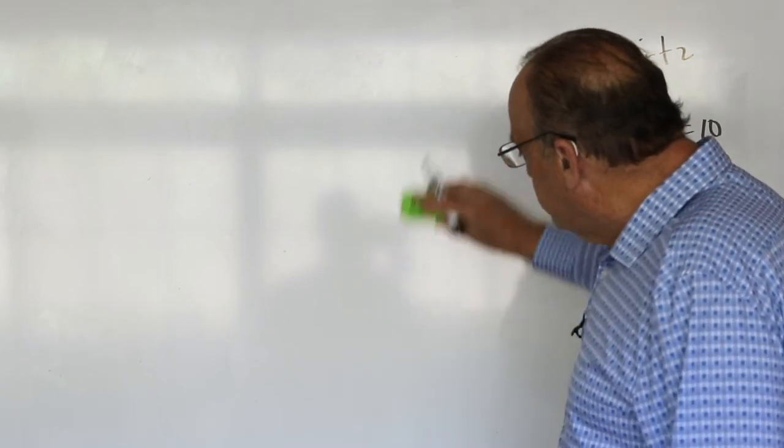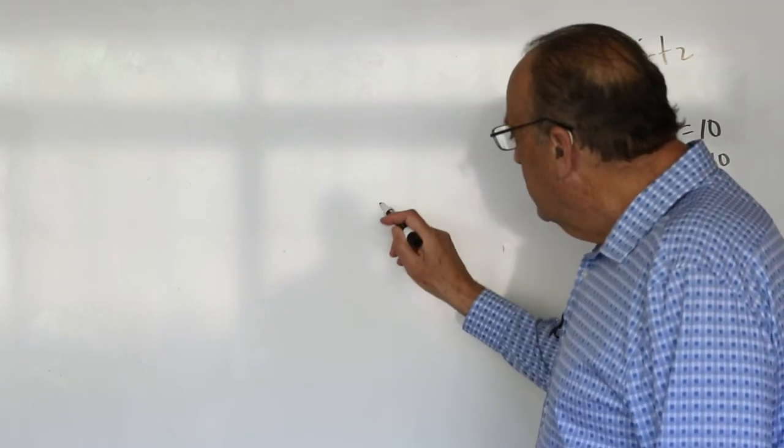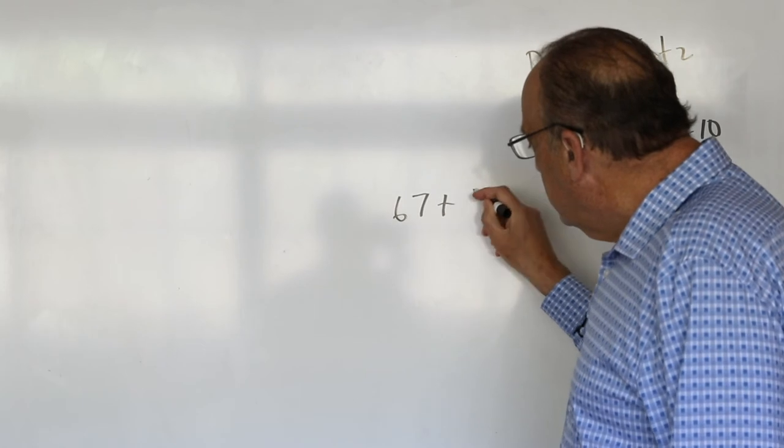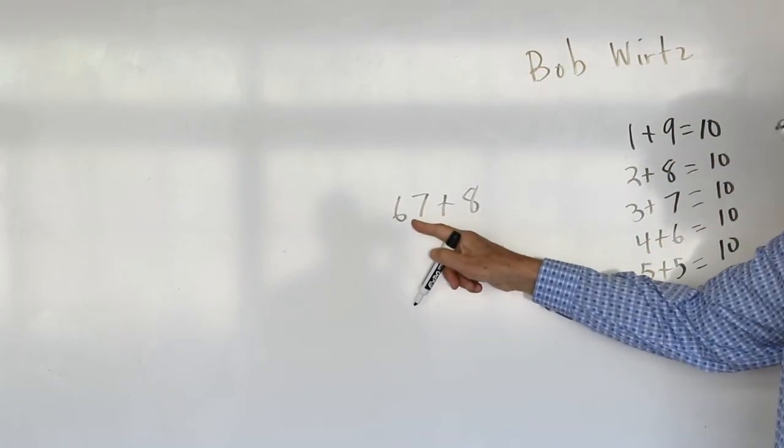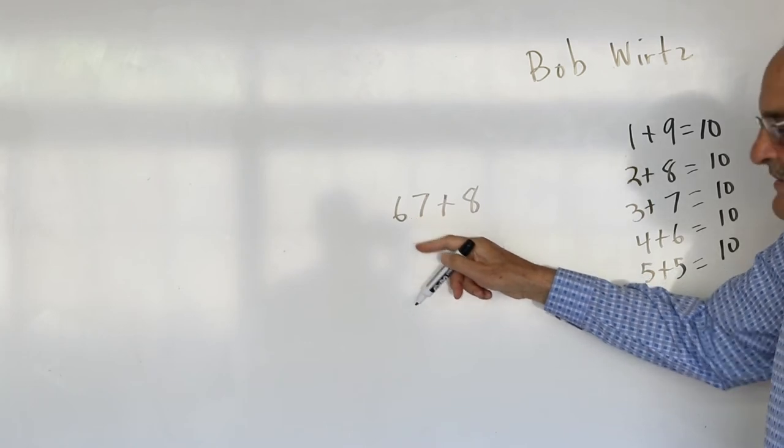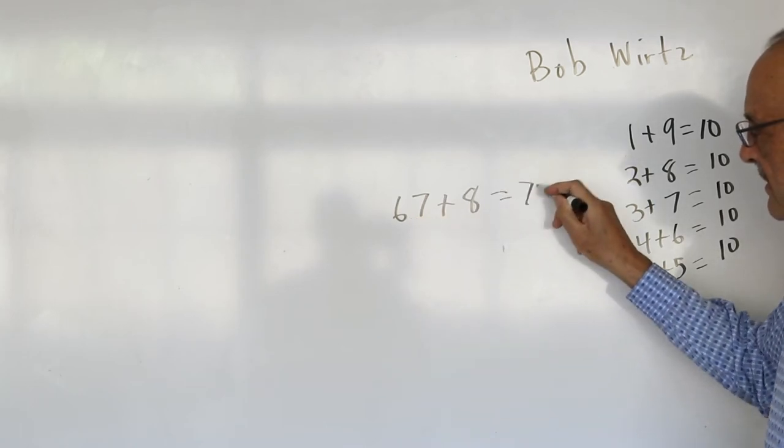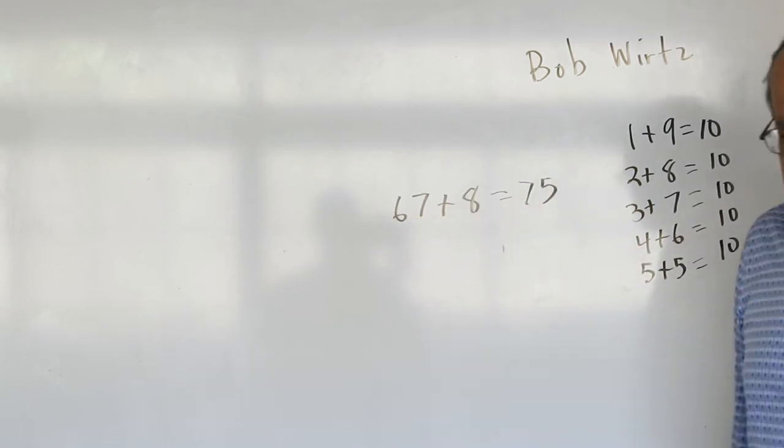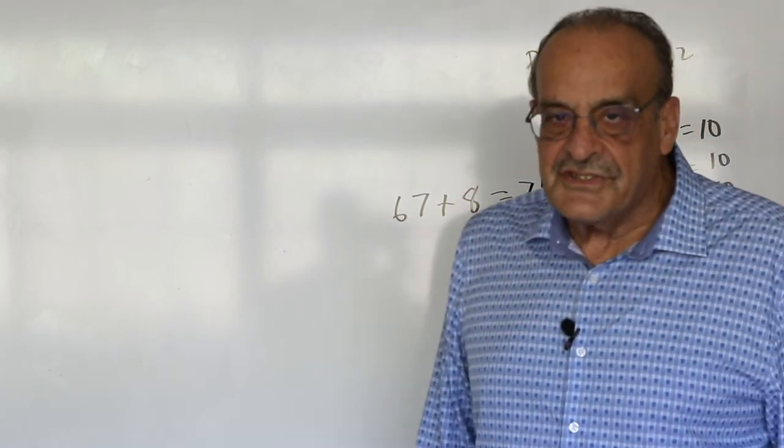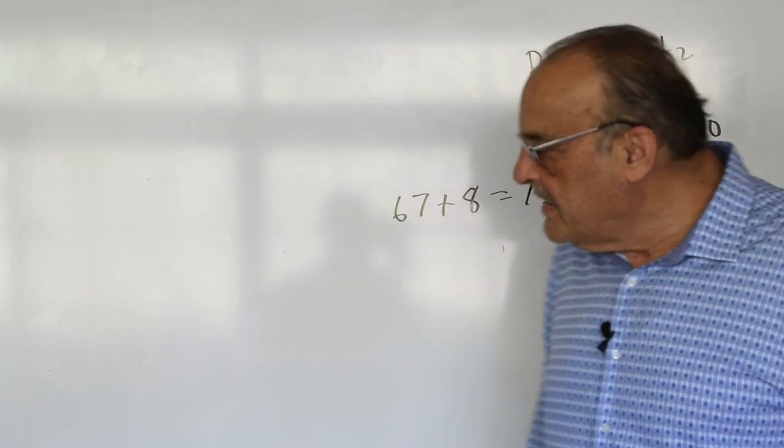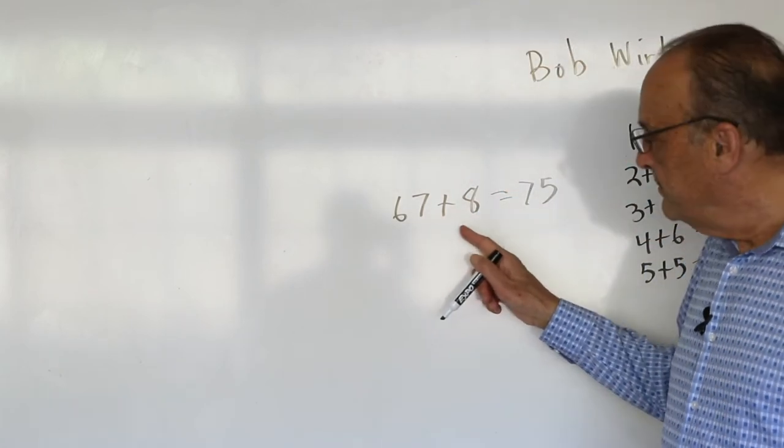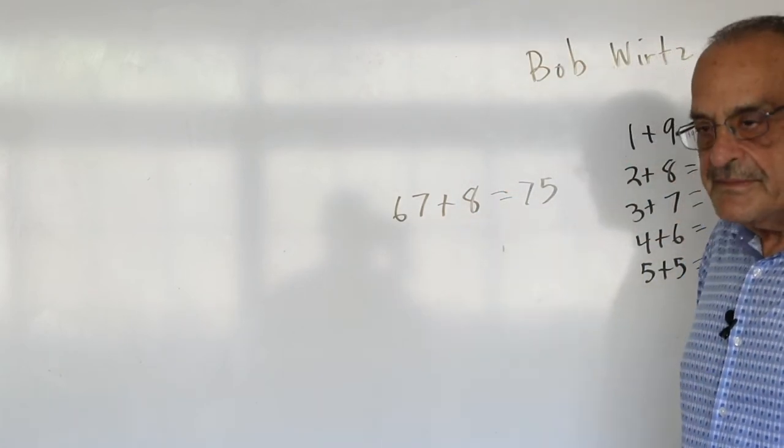And then you can move on to bigger numbers, like 67 plus 8, where they say 67 plus 3 is 70, plus 5 is 75. So again, the focus of the lesson is for them to say a sentence. And I like to stand at the board with them when we do this a lot of times.